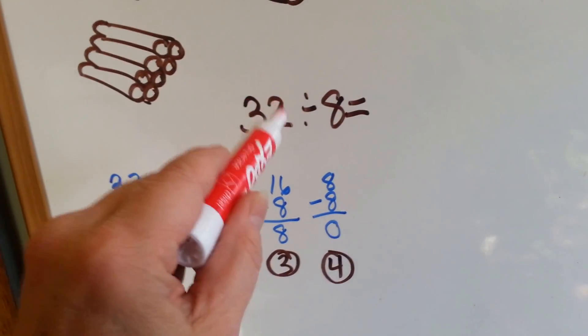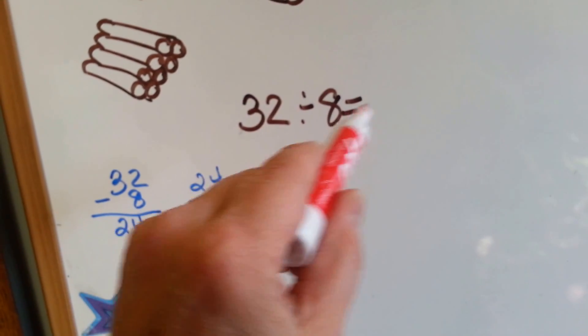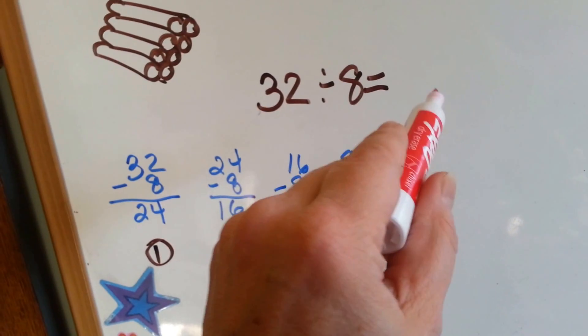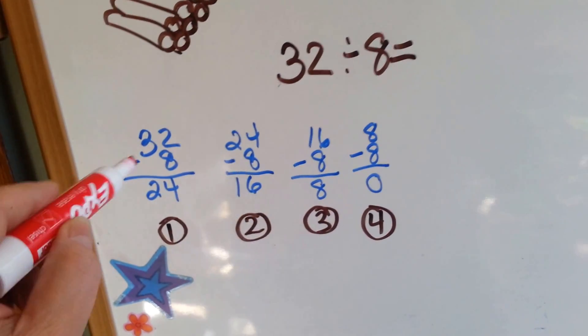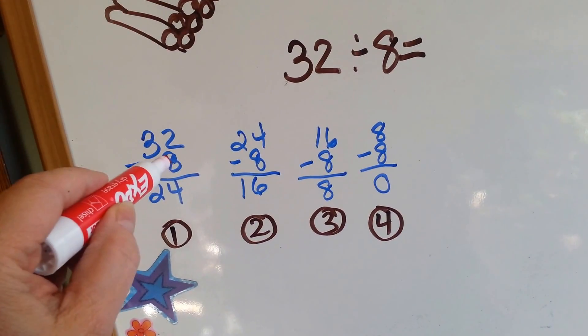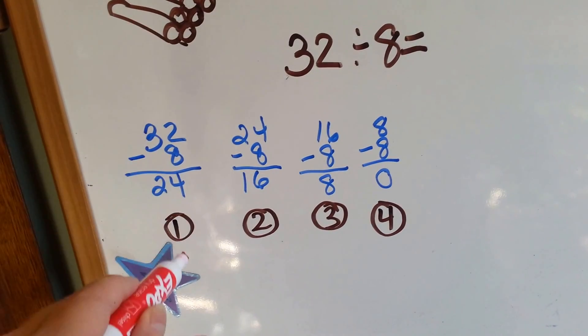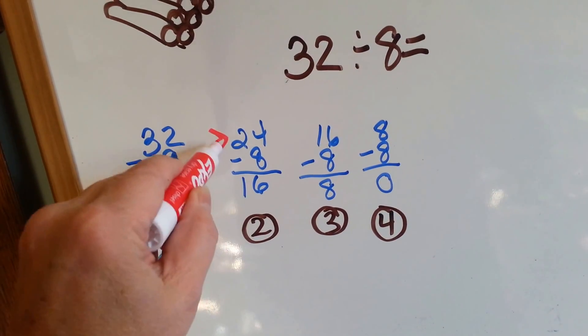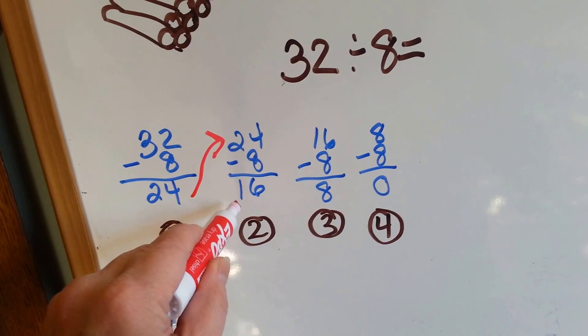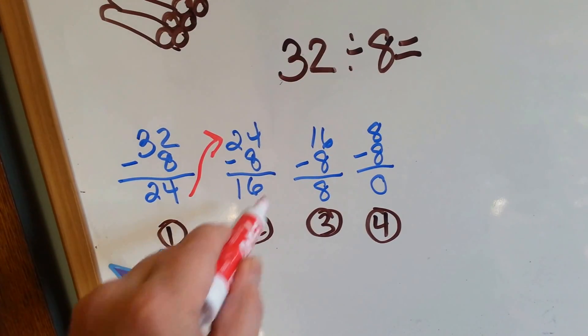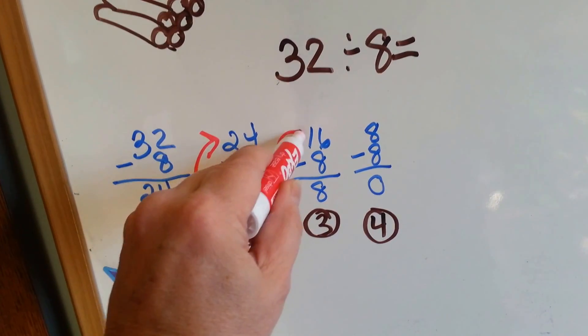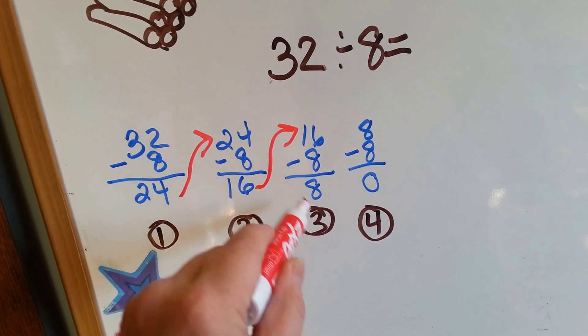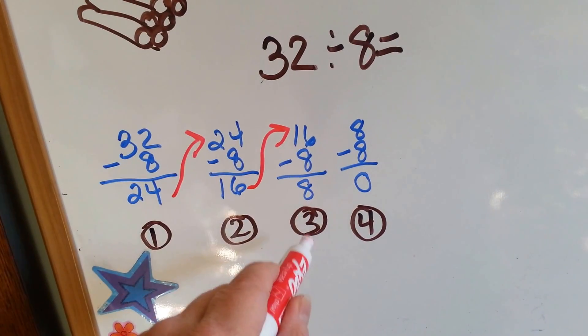Here's our problem: 32 can be divided by 8. How many times will it be divided? We start with 32 and we take 8 away and we get 24. That's our first one. Then we take the 24 and we take away 8 and we get 16. That's the second one. We take the 16, we take away 8, and we get 8. That's the third one.